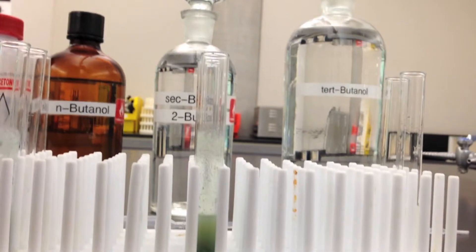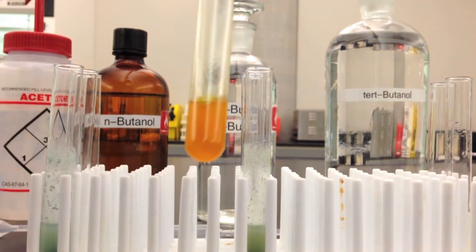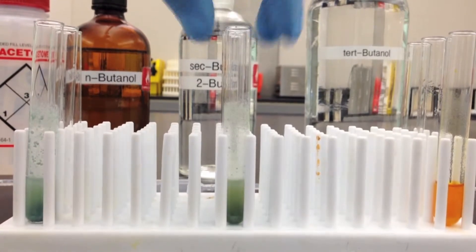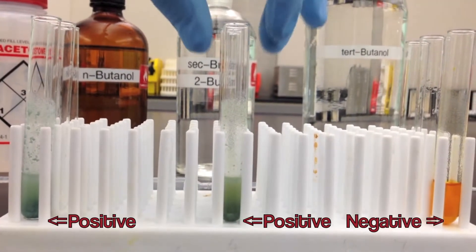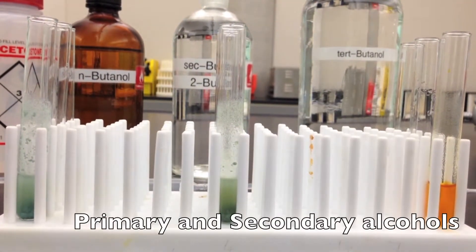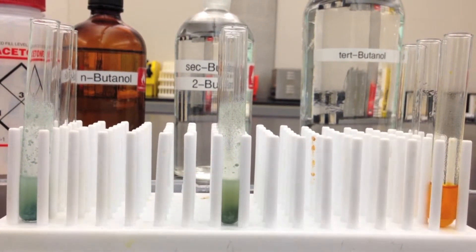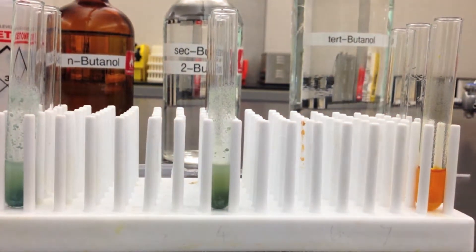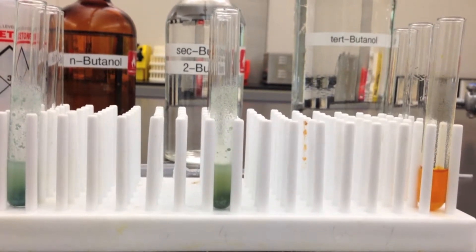This orange, this is considered a negative result. Because the chromic acid, if it had added to the alcohol group to create an aldehyde would have turned green. And that only happens in primary and secondary alcohols. So these two we can assume are either primary or secondary. And this one we can assume must be the tertiary, since it did not react at all whatsoever.